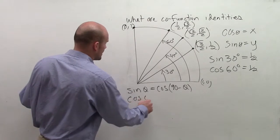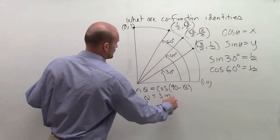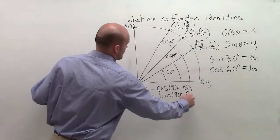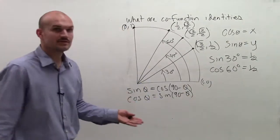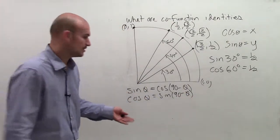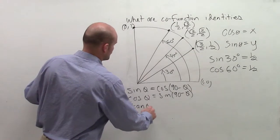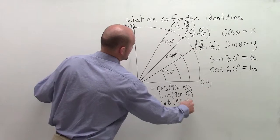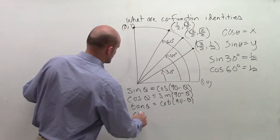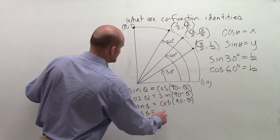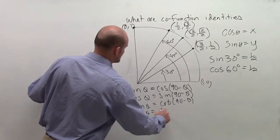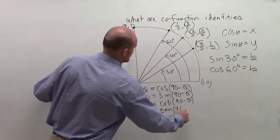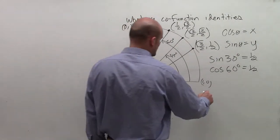And that works the other way around, as well. Then this also works for our other functions. So I could have tangent of theta is equal to the cotangent of 90 minus theta, as well as cotangent of theta is equal to tangent times 90 minus theta.